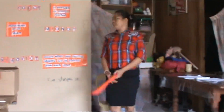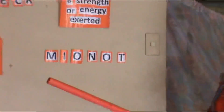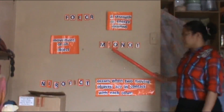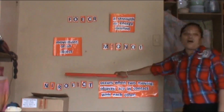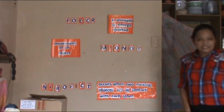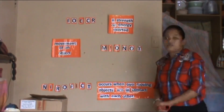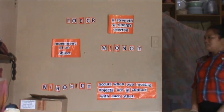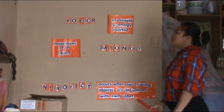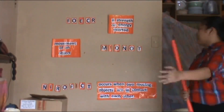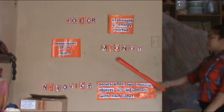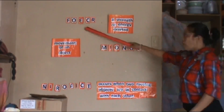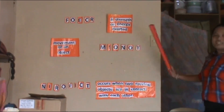Now, class, I have here jumbled words on the board. All you need to do is decode the words or arrange the letters using the meaning on its side. Am I clear? Now, I want someone to volunteer. Anyone? Yes, please. Janelle. Okay, thank you, Janelle. You may now take your seat. Now, class, everybody read. Force — a strength or energy exerted.